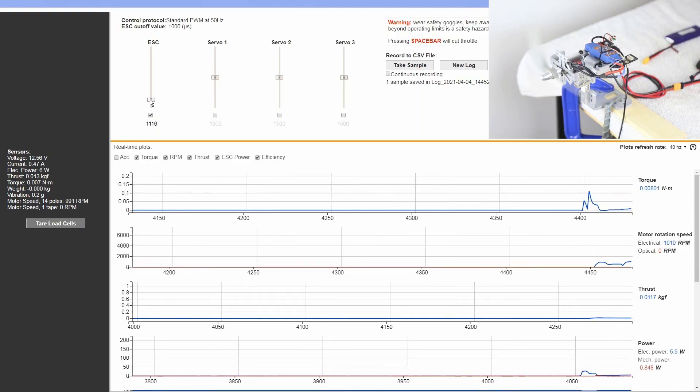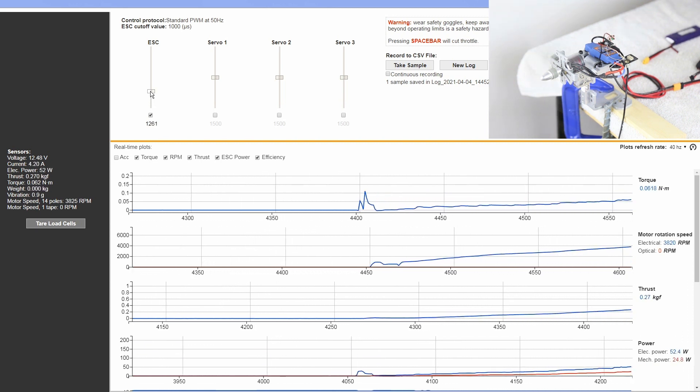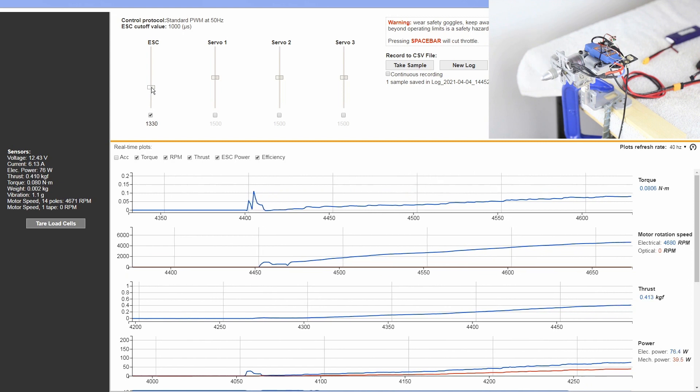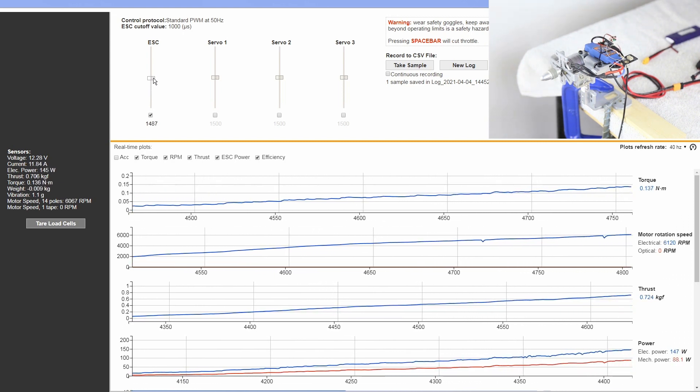Then we take a 3S pack, plug it into that exact same power system and get the throttle position set so that it matches the same mechanical output. Then we compare the two different efficiencies.